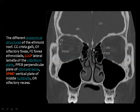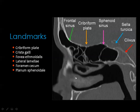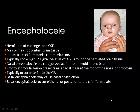In the sagittal image, you can see clearly the frontal sinus, the cribriform plate of the ethmoid, the sphenoid sinus, the dorsum sellae, and the clivus — which we will discuss in the middle cranial fossa.